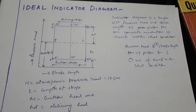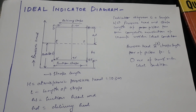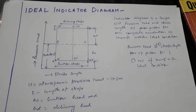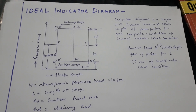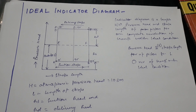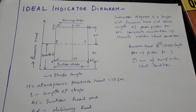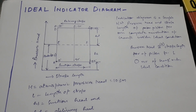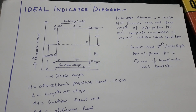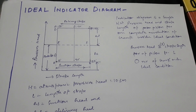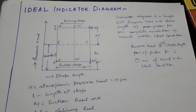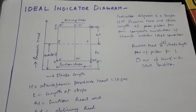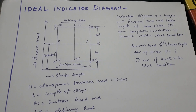Hello and welcome. Today we will learn about the ideal indicator diagram. An indicator diagram is a graph between pressure head and stroke length of the piston for one complete revolution of the crank under ideal conditions.